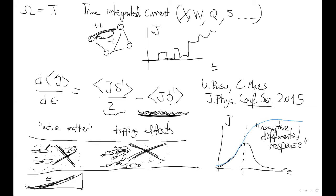This region of negative differential response can only be understood by having the frenetic term in the description. Without it, the dynamics would show only a monotonous increase of the current. This is very important for active matter systems and systems with excluded volume. I don't know how much time we have, but I wanted to show experimental results on slides. Maybe we can take a break of five minutes and then continue.